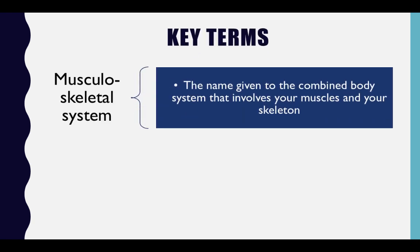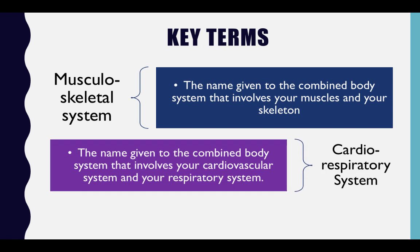Key Terms: Musculoskeletal System — the name given to the combined body systems that involve your muscles and your skeleton. Cardio-Respiratory System — the name given to the combined body systems that involve your cardiovascular system and your respiratory system.